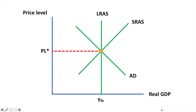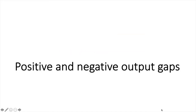This diagram represents an economy in both short-run and long-run equilibrium at output YFE and price level PL star. There is no output gap associated with this equilibrium level. Any movement of short-run equilibrium away from this position will result in an output gap.